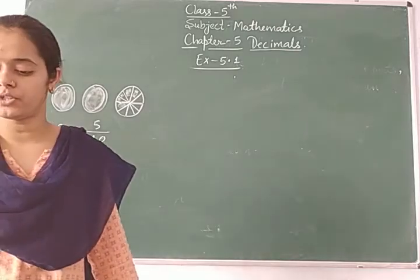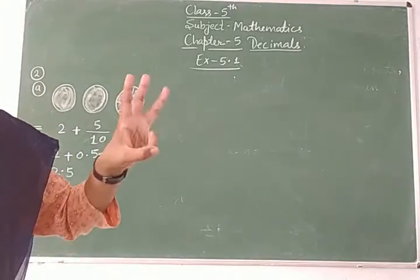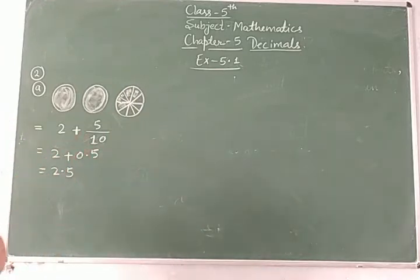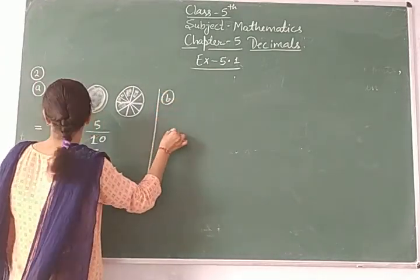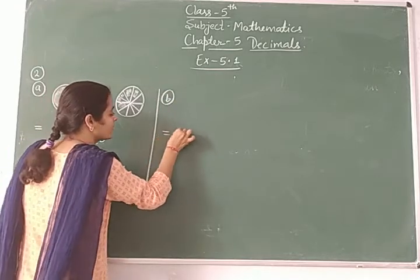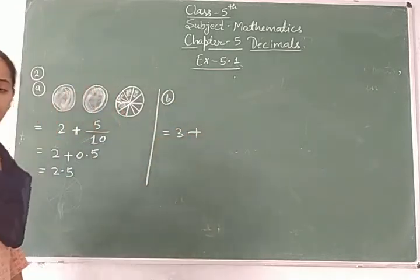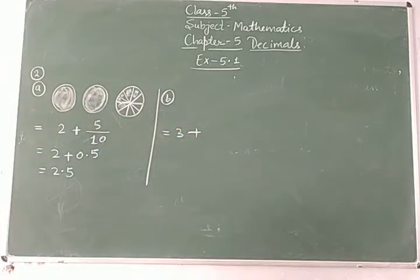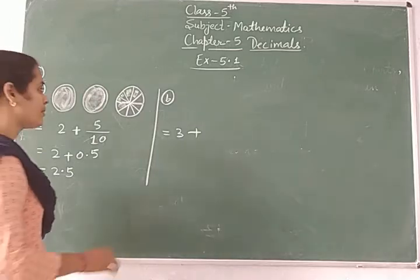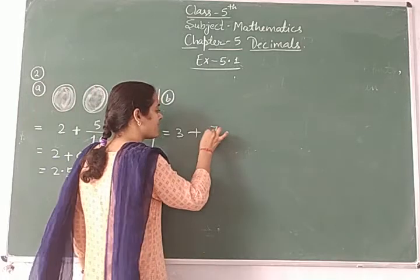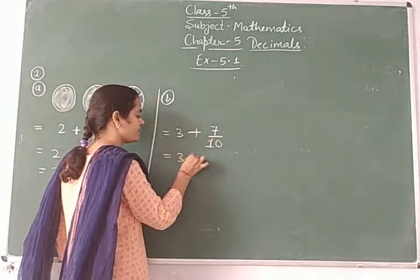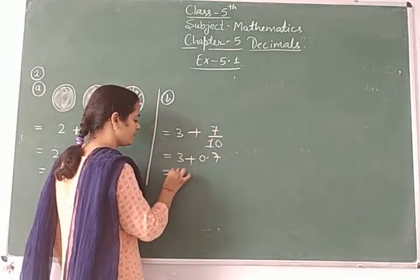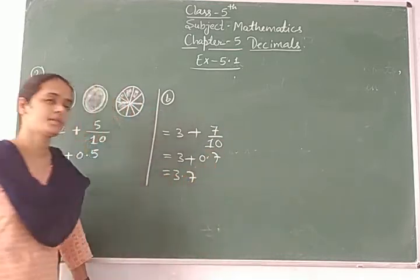Similarly, in question number B: three circles are completely colored — three whole parts. The last circle has total ten parts, and seven parts are colored, so seven upon ten equals 0.7. We get three plus 0.7, which equals 3.7.